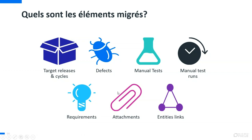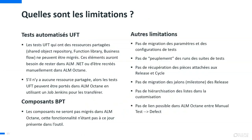On récupère pas mal de choses. Ce qu'on ne récupère pas, c'est au niveau des tests automatisés tout ce qui utilise des ressources partagées — le module test ressources d'UFT, les bibliothèques de fonctions, les object repositories partagés. Ces éléments devront soit rester dans ALM.NET soit être recréés manuellement dans Octane. Les composants BPT ne pourront pas être récupérés puisque la notion de BPT n'existe pas à ce jour dans ALM Octane.